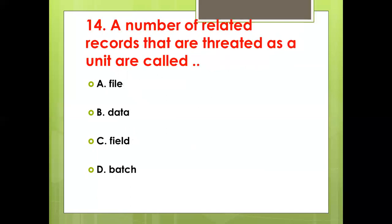Fourteenth bit: A number of related records that are treated as a unit are called a dash — Option A: File. Option B: Data. Option C: Field. Option D: Batch. Answer: Option B, Data.